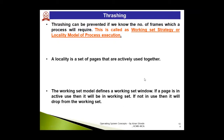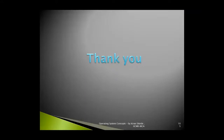A locality is a set of pages that are actively used together. The working set model defines a working set window: if a page is in active use, it remains in the working set; if not, it is dropped. For example, if a process needs 10 frames and 4 are shown in the working set, those 4 frames are actively used. The system uses this information to understand which pages are actively required, and this helps prevent thrashing. That concludes this video lecture — stay tuned for the next one.